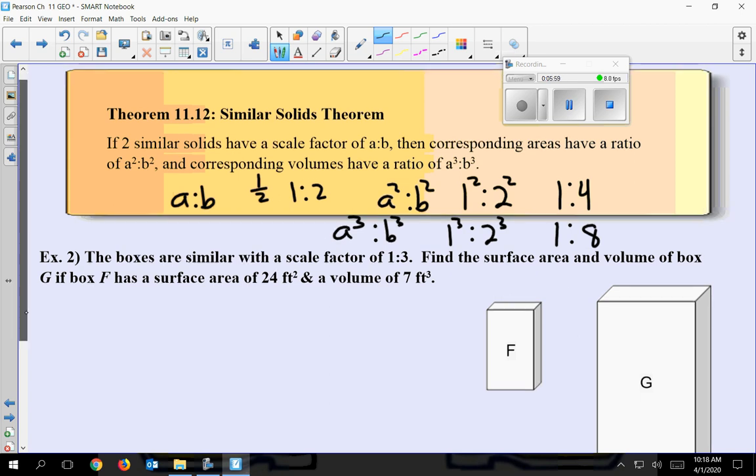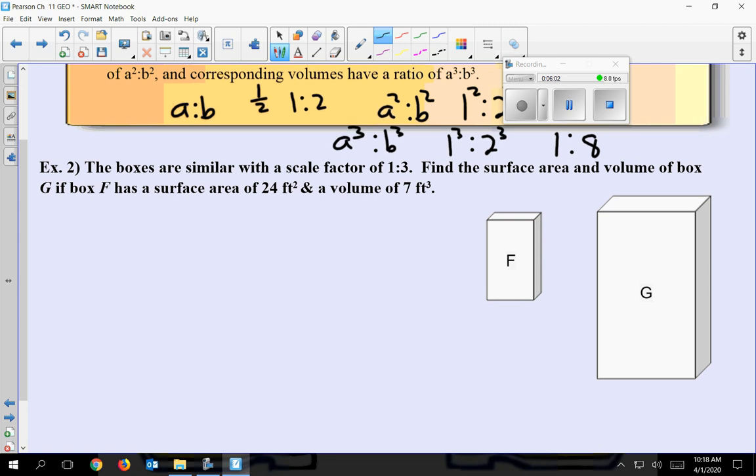So we're going to go down to this problem. We've got to kind of keep that in mind. They give us, they tell us these two solids are the same, they give us a scale factor of 1 to 3, now remember that's for the sides. And they want us to find the surface area and the volume of a box if F has a surface area of 24 and a volume of 7. So they want us to get, they want us to find this. So that's the bigger box. So let's take the ratio of the sides, 1 to 3, and let's do the surface area first. So remember, I'm going to square both of these, so that really gets me 1 over 9.